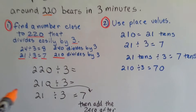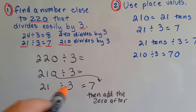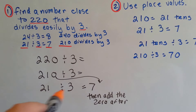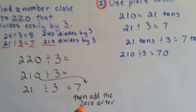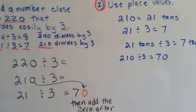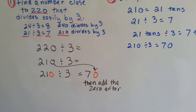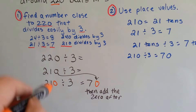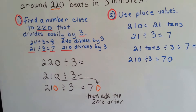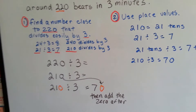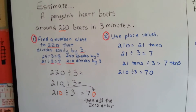We just put the 0 on afterwards. We do 21 divided by 3, which equals 7, and we put this 0 on afterwards. That gets us 210 divided by 3. That's an estimate because we're not going for an exact amount, but 210 is close to 220. So we can say a penguin's heart beats around 70 times each minute.